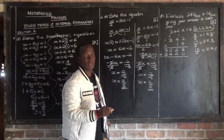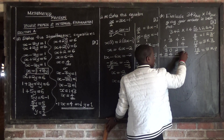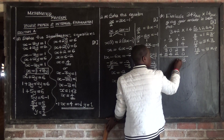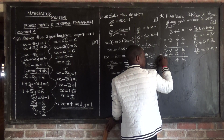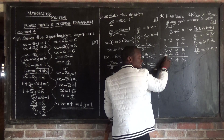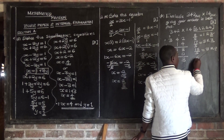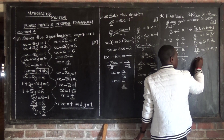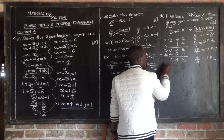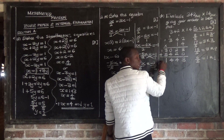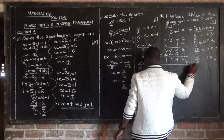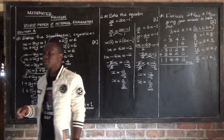Now we add the two rows. 3 plus 0 is 3. 2 plus 2 is 4. 0 plus 4 is 4. Then 3 plus 3 is 6 — we don't write 6 in base 5, so 6 divided by 5: 5 goes once with remainder 1. Write remainder 1 and carry forward 1, then drop this 1. So this is our final answer in base 5. Very good.